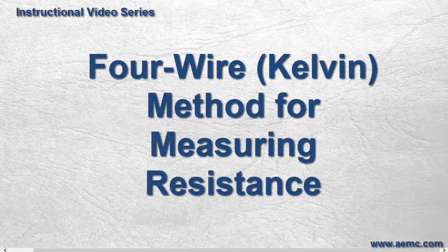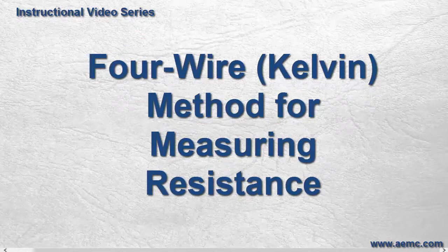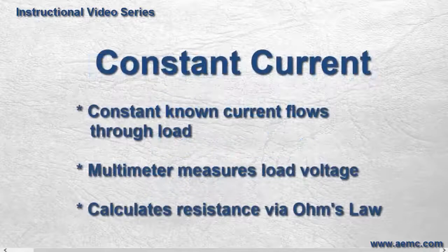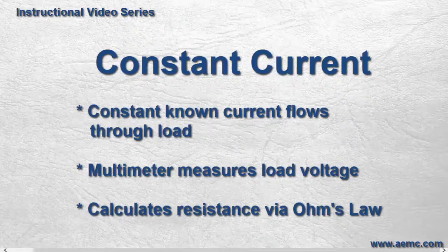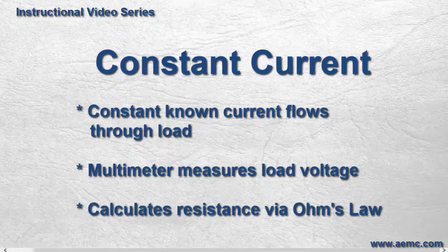To measure the resistance or impedance of a load, multimeters often use a technique known as constant current. In this method, a source current of a constant and known amperage flows across the load under test. The multimeter simultaneously measures the voltage across the load and employs Ohm's law to calculate the resistance.